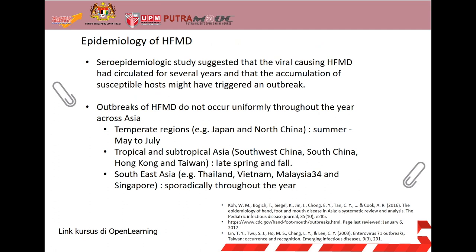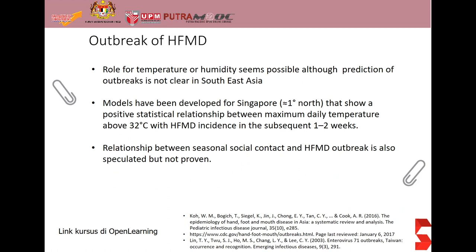Studies have shown that the viruses causing HFMD had circulated for several years and that the accumulation of susceptible hosts might have triggered an outbreak. The outbreaks occur during summer in temperate regions, late spring and fall in tropical and subtropical Asia, and sporadically through the year in Southeast Asia. A role for temperature or humidity seems possible, although prediction of outbreaks is not clear in Southeast Asia.